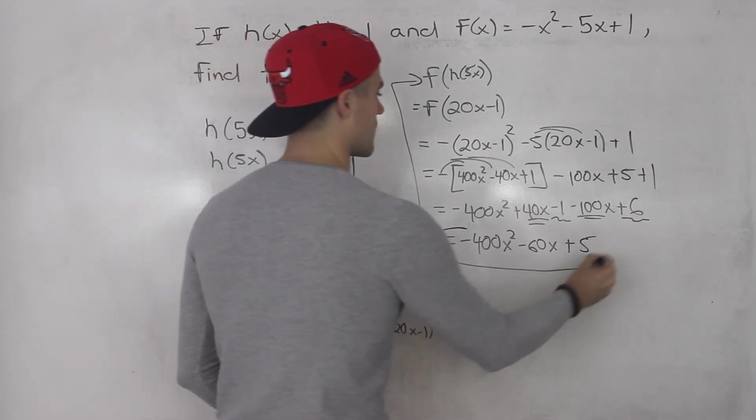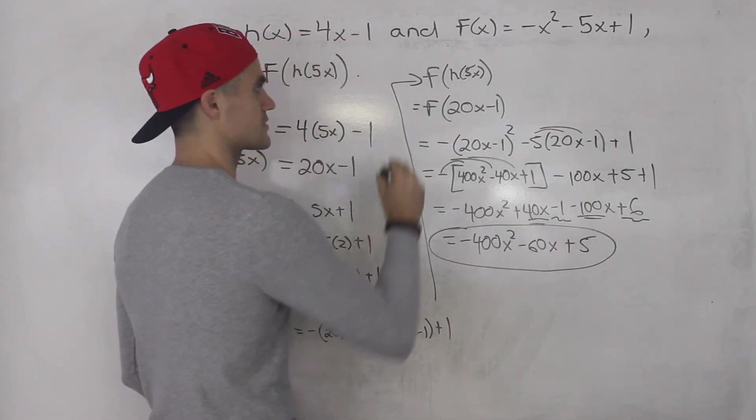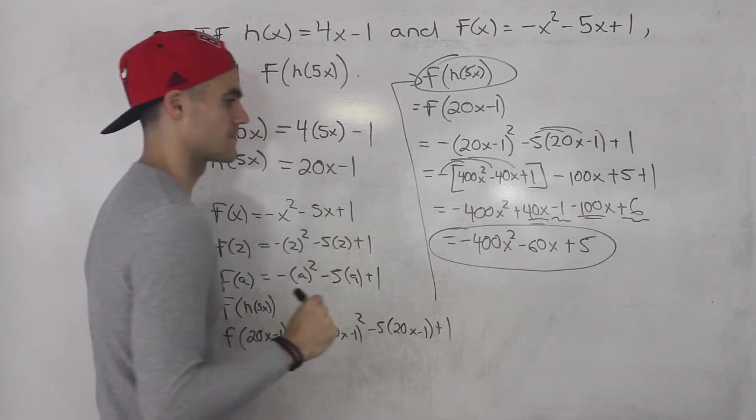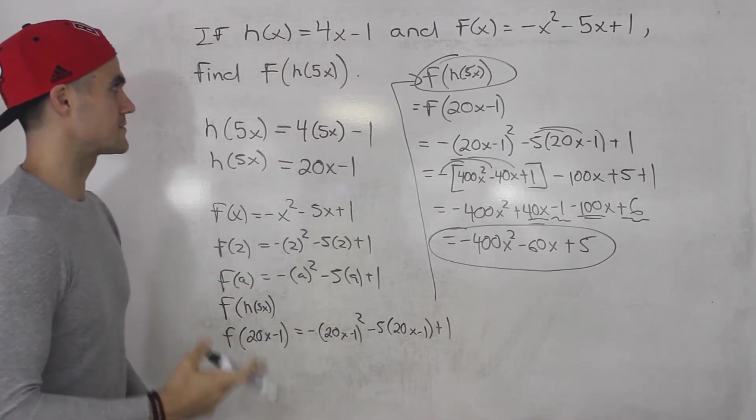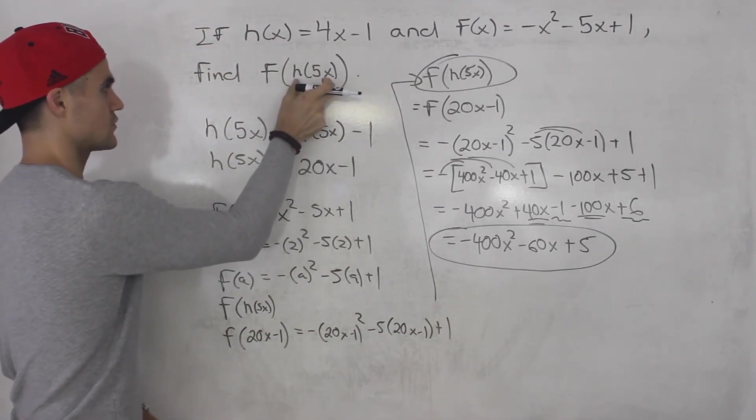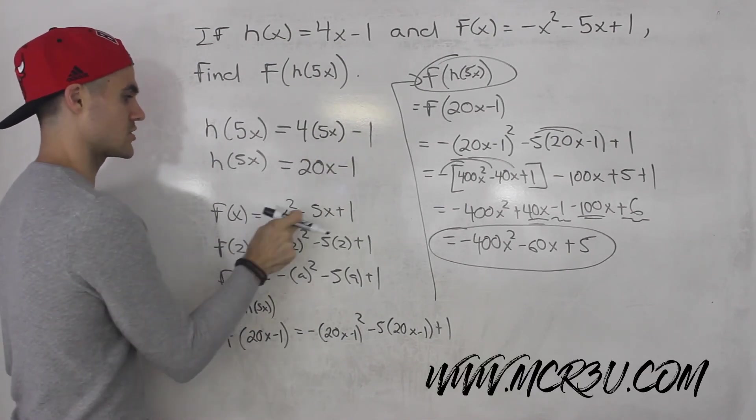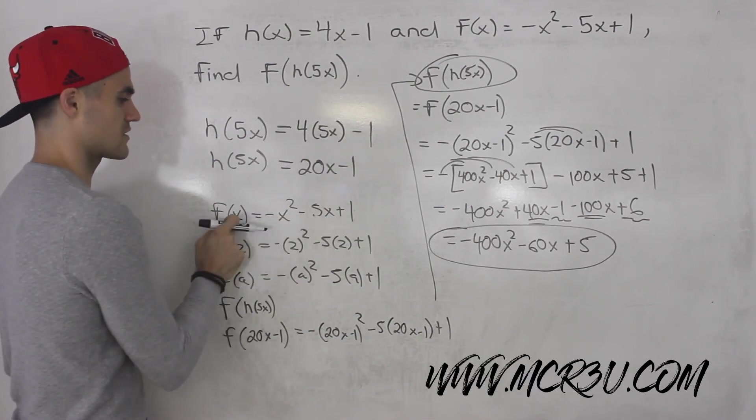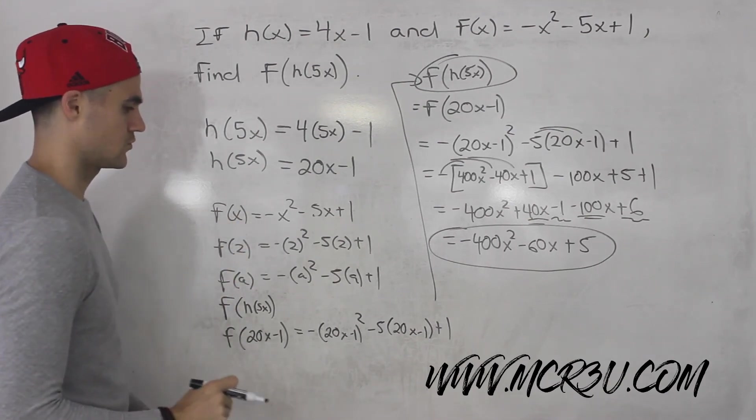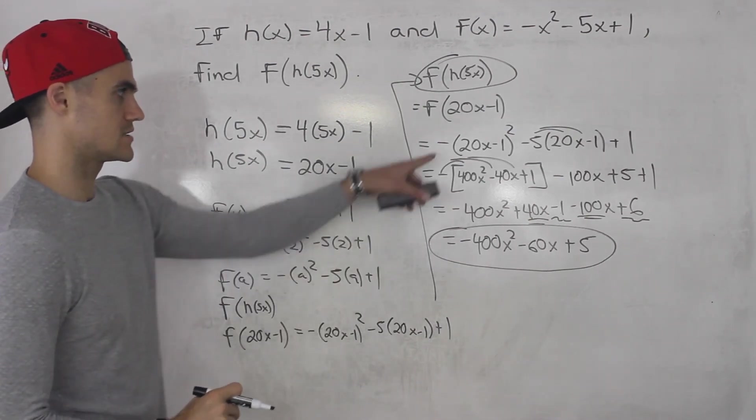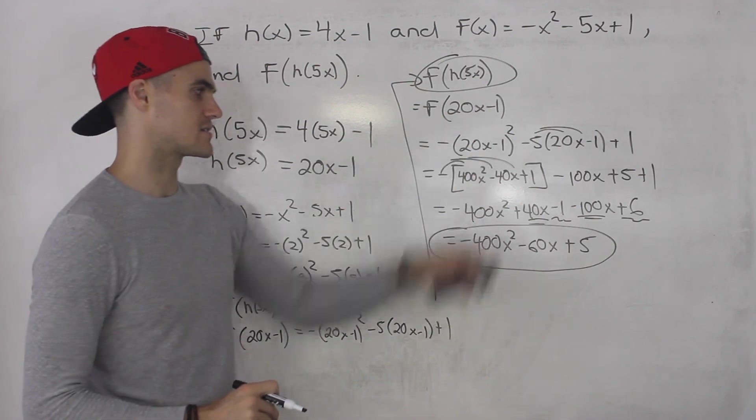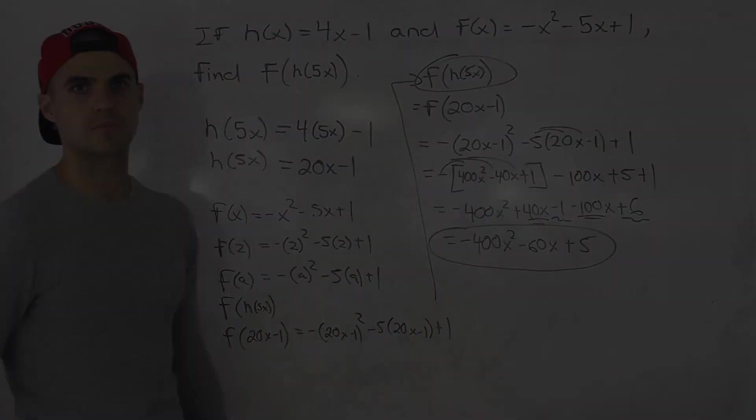So that there is your final answer. That's what f(h(5x)) is. All right, so a couple of steps. So what you want to do, start off with h(5x) first, get an expression for that, and take that expression and plug it in for the x values of f(x), which we did here. And then you just want to simplify everything, then you get your final expression.